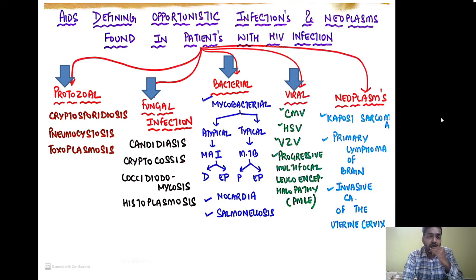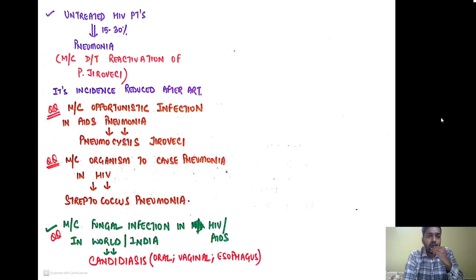Viral infections include cytomegalovirus, herpes simplex virus, varicella zoster, and PML — progressive multifocal leukoencephalopathy — caused by the JC virus. The AIDS-defining neoplasms are three: Kaposi sarcoma, primary lymphoma of the brain, and invasive carcinoma of the uterine cervix. Along with primary CNS lymphoma, non-Hodgkin lymphoma is also very important in AIDS.